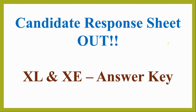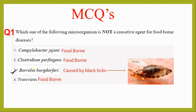Candidate response sheets are out. I want to convey that since XE Food Technology is of 35 marks and XL Food Technology is of 30 marks, there would be some questions appearing in the XE branch but not in XL. So for those Food Technology candidates watching for XL, please don't panic if you did not have a particular question in your set. Let's start — beginning with MCQs, then multiple select questions which were unique this time, and then towards the end we'll discuss the numericals.